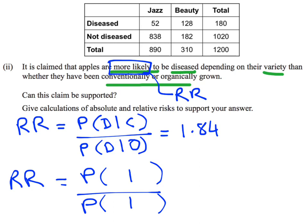If I look at my jazz and my beauty varieties, those are the two things that I want to compare. So I want to compare the beauty variety with the jazz variety. And I want to look at what's the probability of getting a diseased apple knowing that I've got a beauty apple, and what's the probability of a diseased apple knowing I have a jazz apple. That's the probability of disease given beauty, over the probability of disease given jazz.